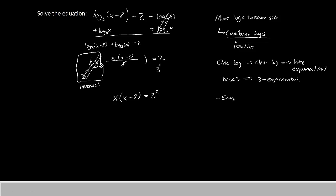Now we can simplify this a little bit further even. Because we can multiply this x times both of these terms. x times x is x squared. And x times negative 8 is negative 8x. And 3 squared is simply 9. Now, instead of having a logarithmic equation, we have a quadratic equation.